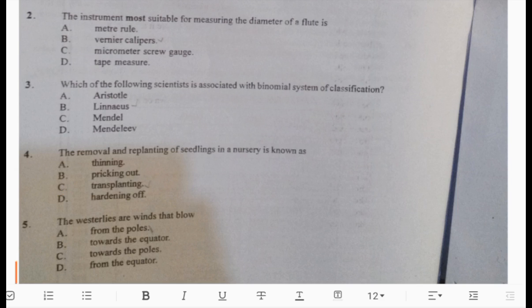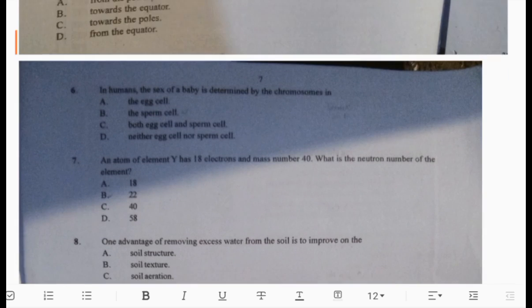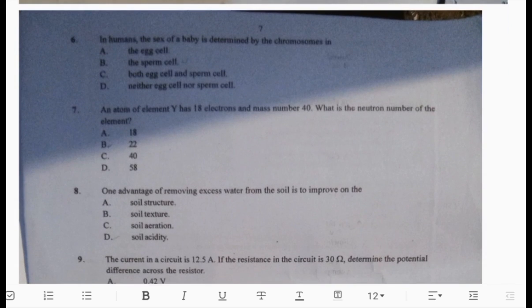Number five: the westerlies are winds that blow towards the poles. Number six: in humans, the sex of a baby is determined by the chromosome in... we have egg cell, sperm cell, both egg cell and sperm cell, or neither. The answer is B, the sperm cell.